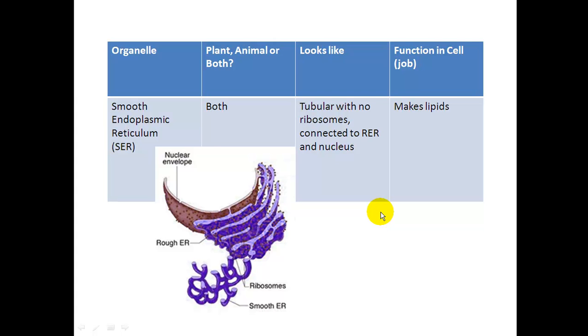The next one is the smooth ER. You can abbreviate that as SER. Here's the rough ER, here's your nucleus, here's your rough. And then notice the smooth ER is a little bit different looking. It's tubular, it's not as stacked, you know, flat tunnels-like. It is found in plants and animals. So it's more tubular and it's smooth, which means it does not have any ribosomes like the rough ER does. Smooth, no ribosomes. And it also is connected by the membranes to the rough ER and the nucleus.